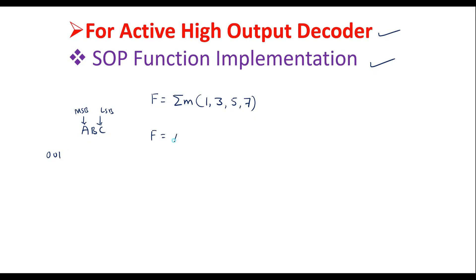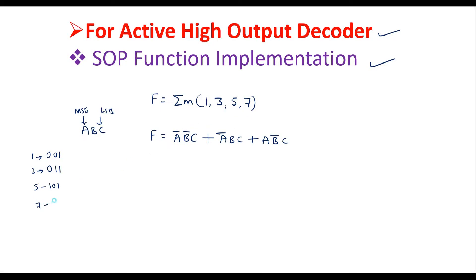In variable form: min term 1 (001) is a-bar b-bar c; min term 3 (011) is a-bar b c; min term 5 (101) is a b-bar c; and min term 7 (111) is a b c. So f = a-bar b-bar c + a-bar b c + a b-bar c + a b c, which is the SOP representation of min terms 1, 3, 5, 7.